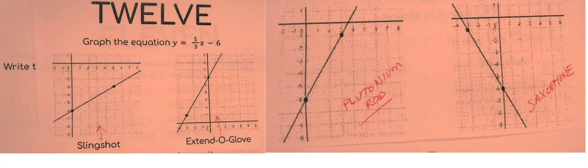Okay, on problem 12 we're supposed to graph the equation 5/3x minus 6. So if I follow the form y equals the slope times x plus the y-intercept, I see that my y-intercept is negative 6.